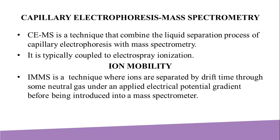The last separation technique is ion mobility. Ion mobility spectrometry mass spectrometry is a technique where ions are first separated by drift time through a neutral gas under an applied electrical potential gradient before being introduced into a mass spectrometer. Drift time is a measure of the radius relative to the charge of the ion. The duty cycle of IMS is longer than most mass spectrometry techniques, allowing the mass spectrometer to sample along the IMS separation. IMS can be coupled to LC or GC, producing triple modalities such as LC-IMS-MS.